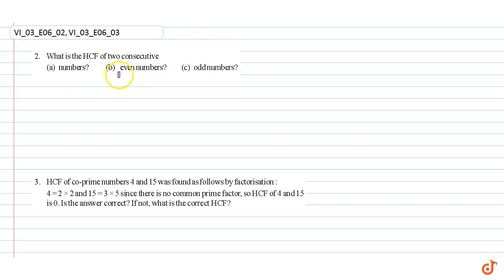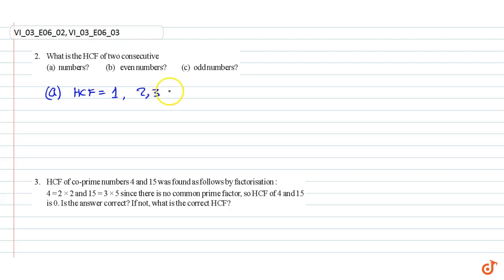In this video we are going to solve question number two and three. Question number two: what is the HCF of two consecutive numbers? HCF is equal to one, because two and three are two consecutive numbers. Two is equal to one into two, three is equal to one into three, therefore HCF is equal to one.